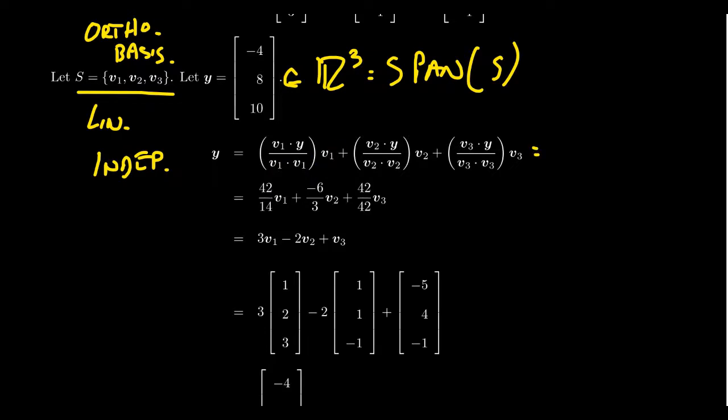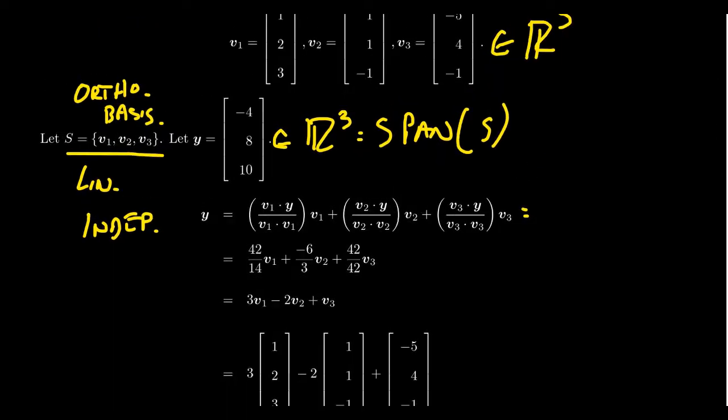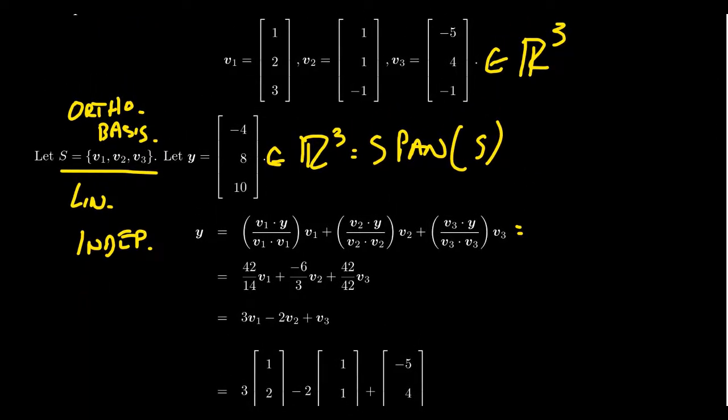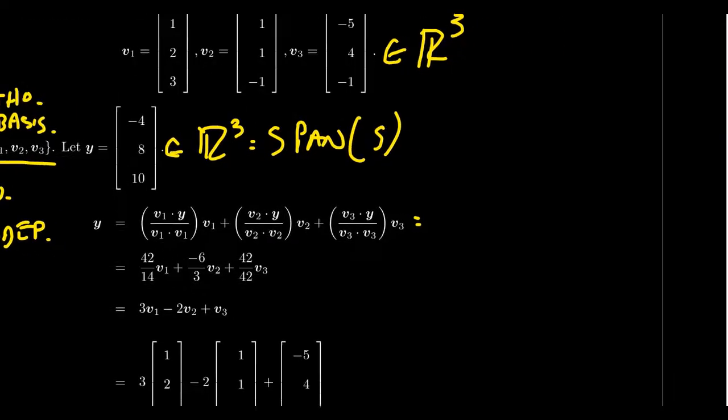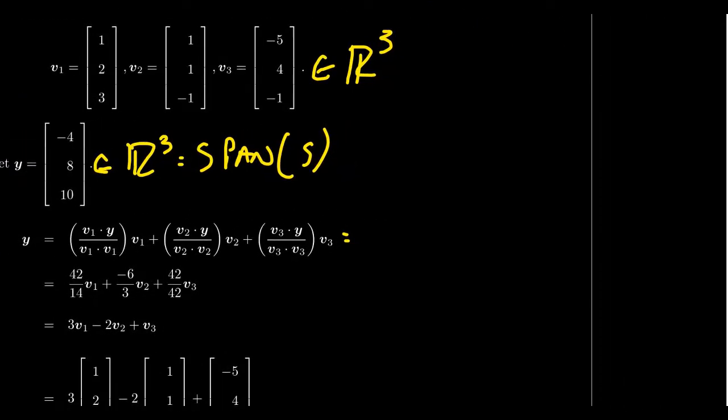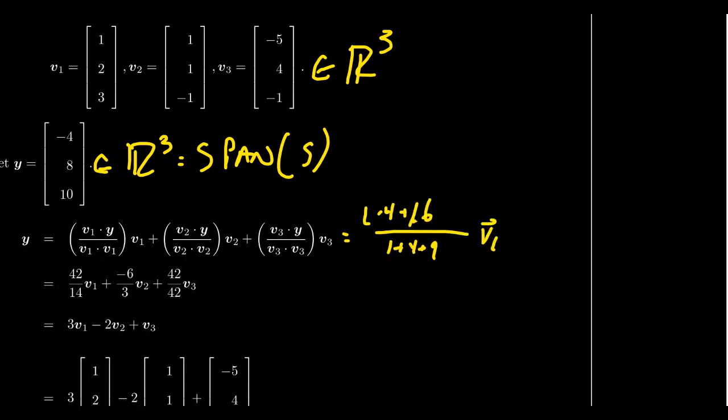So, if we actually see what that looks like, we're going to take, oh, you can't see it. If you take V1 dot Y, I'm also going to scooch this over here to the side so we have some space. So, if you take the dot product between V1 and Y, you end up with negative 4.